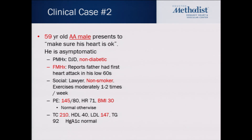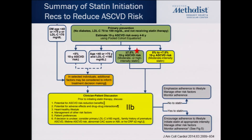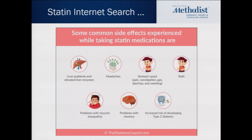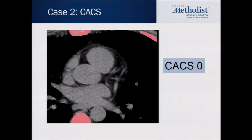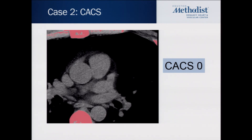Let me show you another case. Same patient, same risk factors — the only thing I changed was making this patient a male. I calculated his risk and it comes out to be 10.6%. By the guidelines, I need to put this patient on statin therapy — it's a class one recommendation. I spoke to this patient in detail about the risks and benefits, but he refused. He'd read about side effects on the internet, and his friends taking it weren't happy with the medicine.